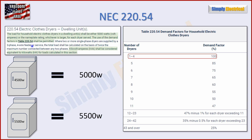The use of demand factors in table 220.54 shall be permitted. I'm going to skip the three-phase section for now and come back to it later. The last sentence says kilovolt amperes or KVA shall be considered equivalent to kilowatts for loads calculated in this section. That's pretty standard — we interchange KVA and KW often, especially when dealing with load calculations, and they're using them interchangeably here.